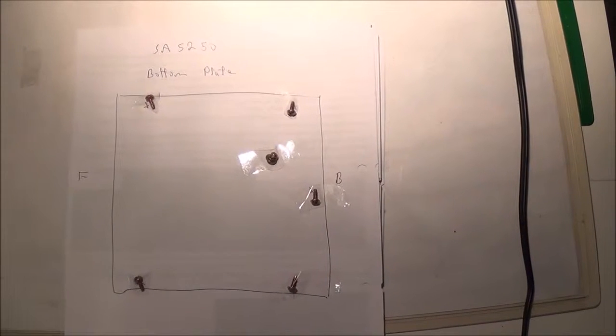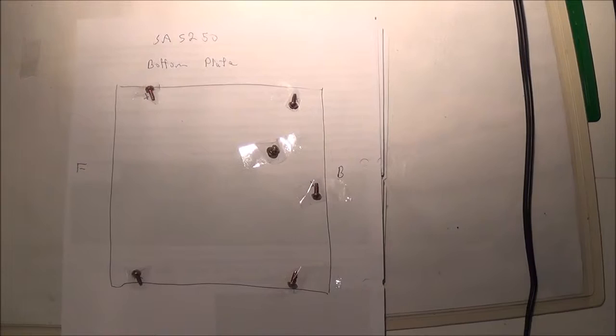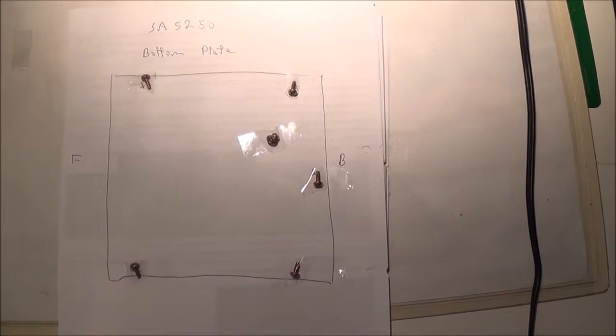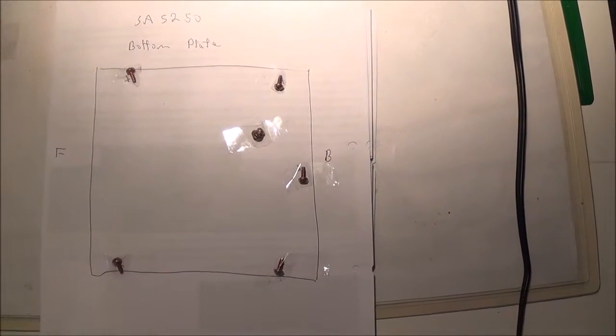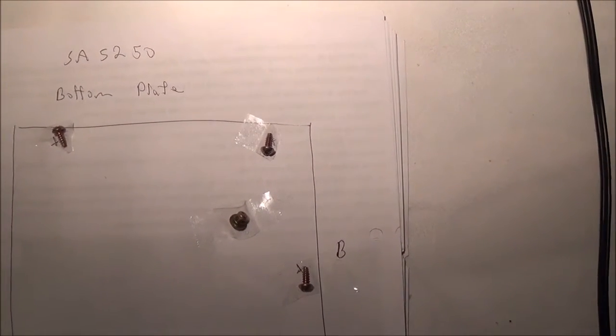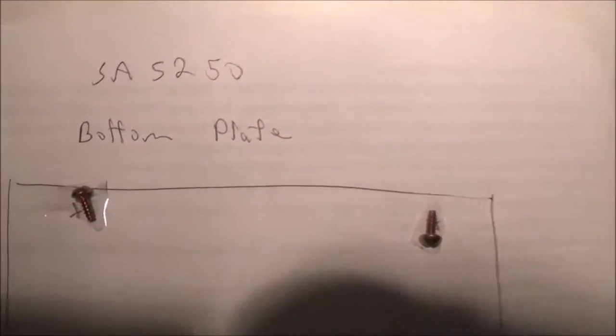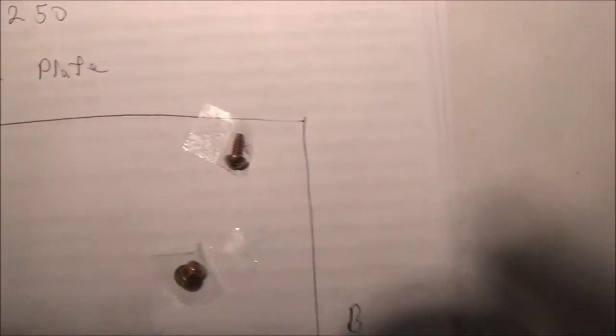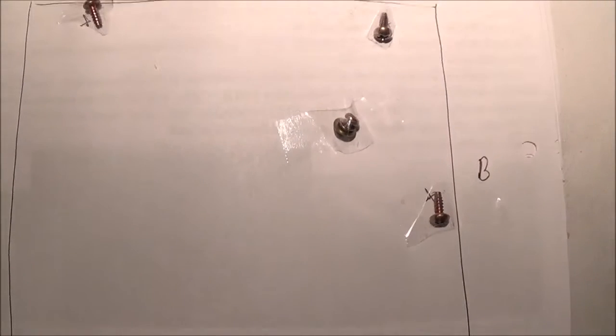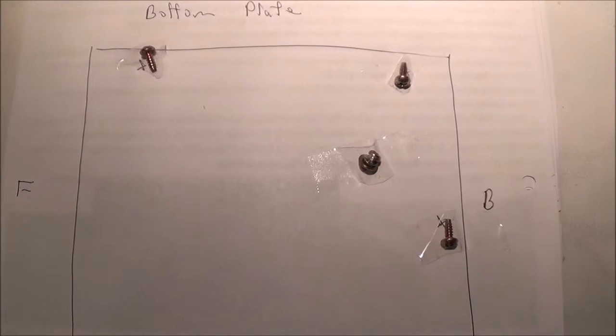So I took off the bottom plate. Sometimes there are different size screws, so what I always do is just take a plain piece of white paper and make a basic sketch of where the front and where the back is. I make little X's where the screws are supposed to go, and then I just take a piece of tape and tape each screw down. That's the way I do it, and I've never lost a screw this way before.